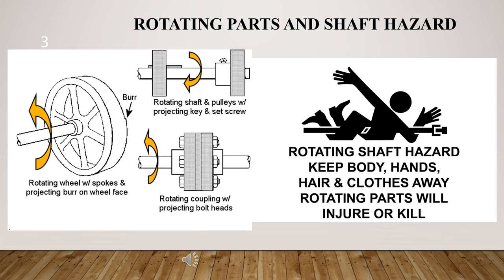In this part, we will discuss rotating parts and shafts hazard. Rotating parts and shafts, such as stock projecting from the chuck of a lathe, can catch hair or clothing and draw the operator in. This can seriously mangle or crush the operator. Operators can also be struck by a projecting bolt or key.